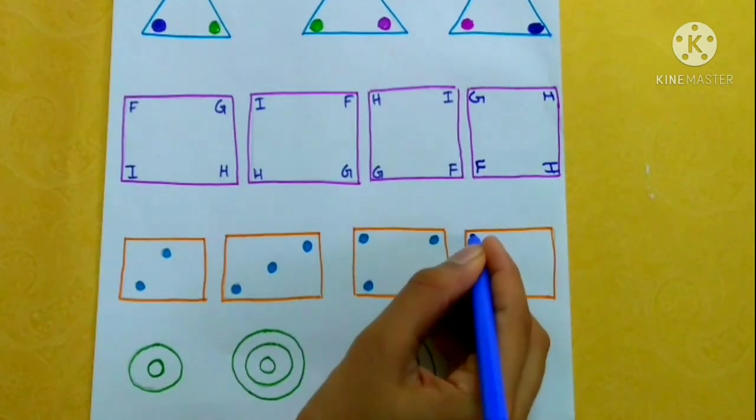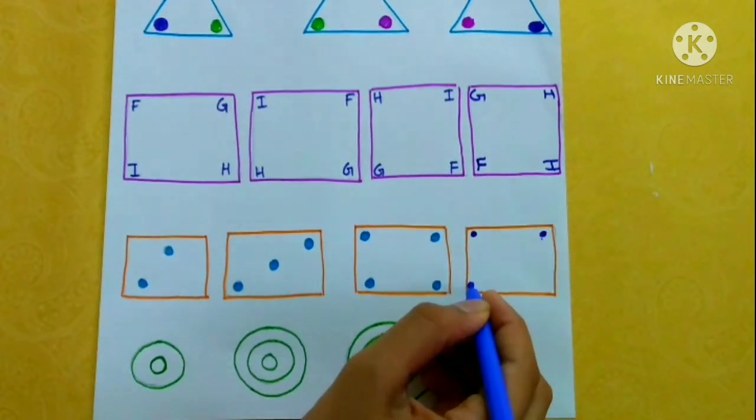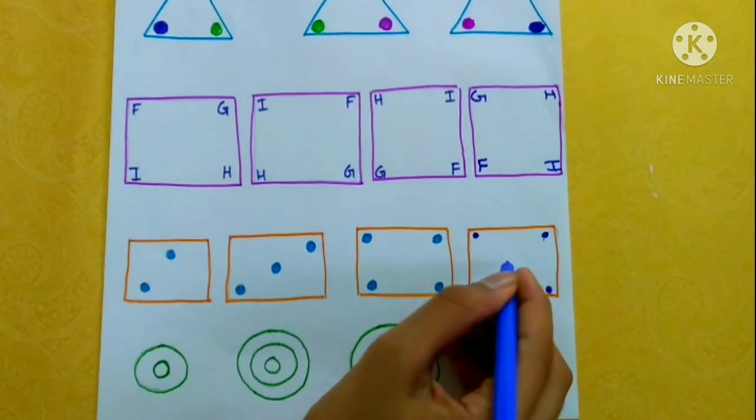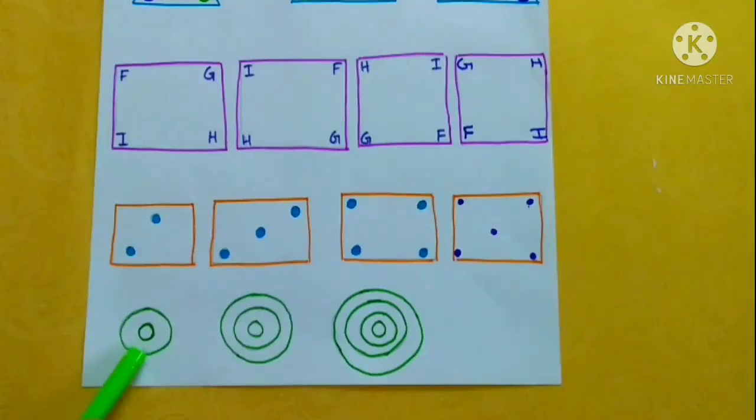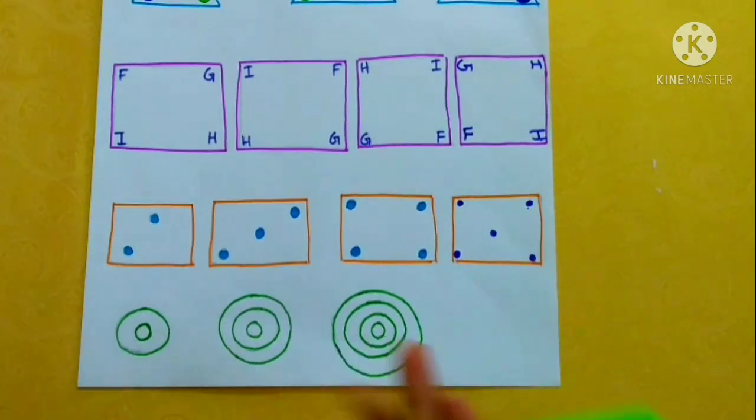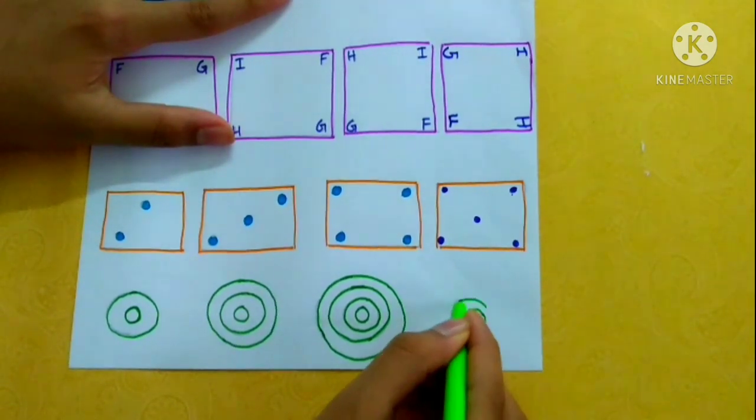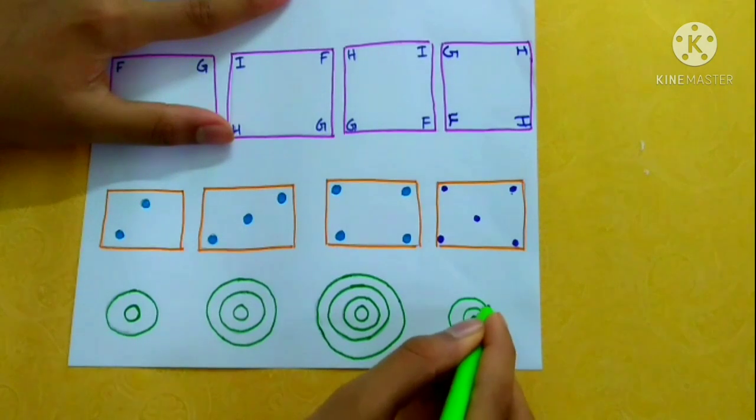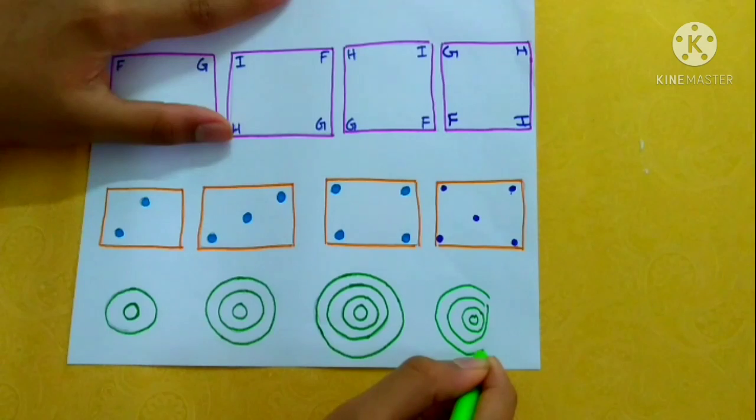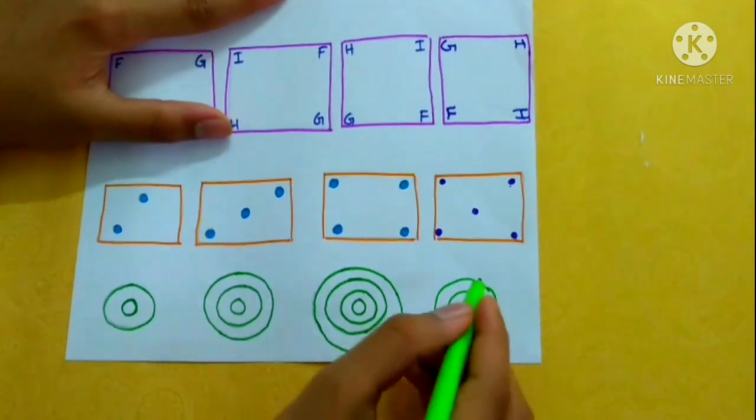One, two, three, four, five. Two circles, three circles, four circles, five circles. One, two, three, four, five.